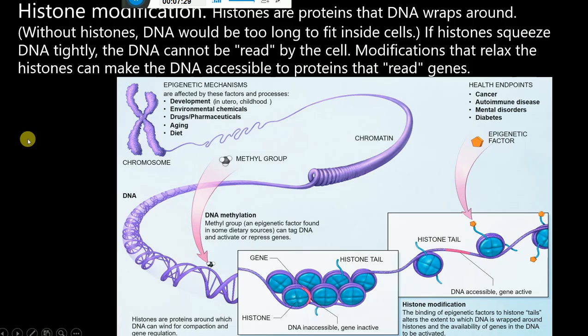Now I want to talk about histone modification, another important mechanism of epigenetics. Histones are the proteins around which DNA wraps. DNA is a very long molecule — several hundred meters long — and such a long DNA cannot fit into a small cell, so coiling and super-coiling occurs around histone proteins. Without histones, DNA would be too long to fit inside cells.